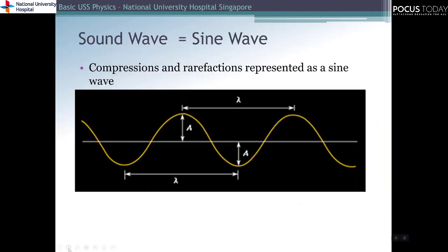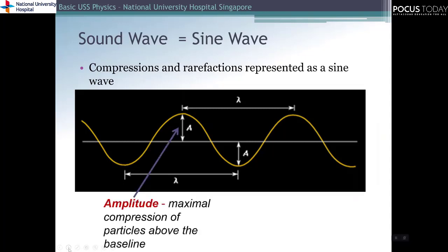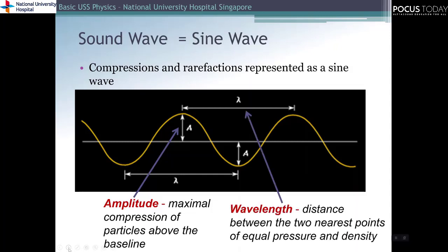We can represent the sound wave as a sine wave as shown in the diagram. The components of the sine wave can be described as amplitude, wavelength, and frequency. Amplitude describes the height of maximal compression above the baseline. Wavelength describes the distance between two nearest points of equal pressure and density.